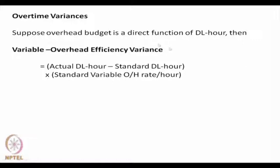Regarding overhead variances: while it is difficult to make a standard for overtime variance, for variable overhead variance — assuming it is a direct function of direct labour hours — the variable overhead efficiency variance is defined as (actual direct labour hours − standard direct labour hours) × standard variable overhead rate per direct labour hour.